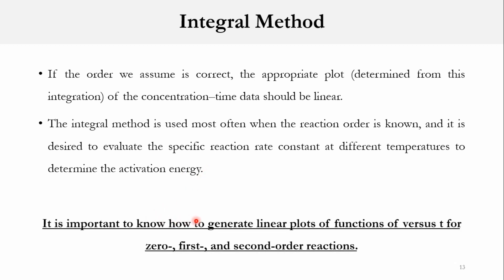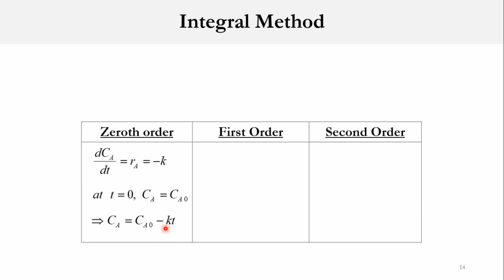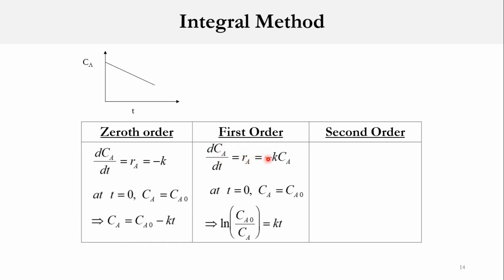Now let us look at how we generate plots for zero, first, and second order. For zero order, the equation is dC_A/dt equals r_A equals minus k. Integrating with limits t=0, C_A=C_A0 to time t, C_A=C_A, we get C_A equals C_A0 minus k·t. This is of the form y equals mx plus c, where y is C_A, the slope m is minus k, x is t, and the slope gives k.